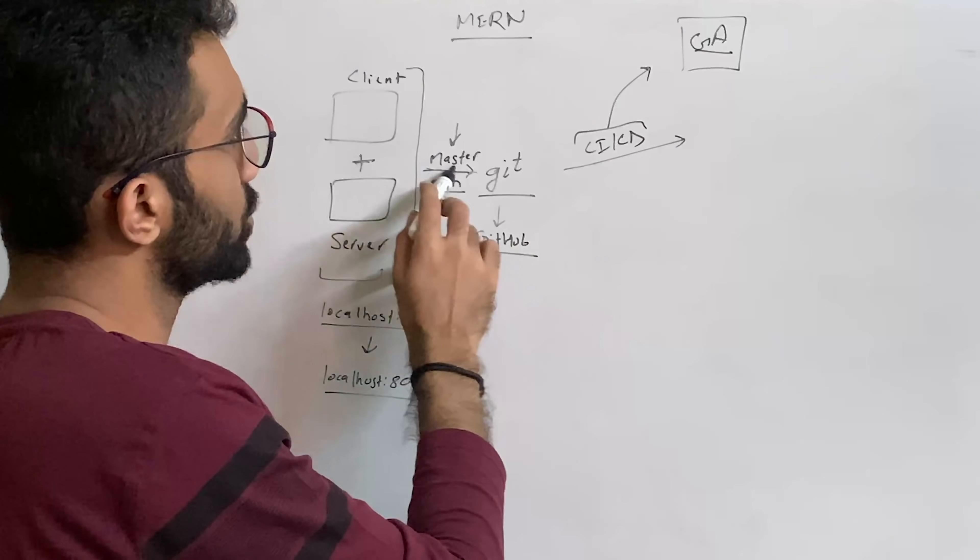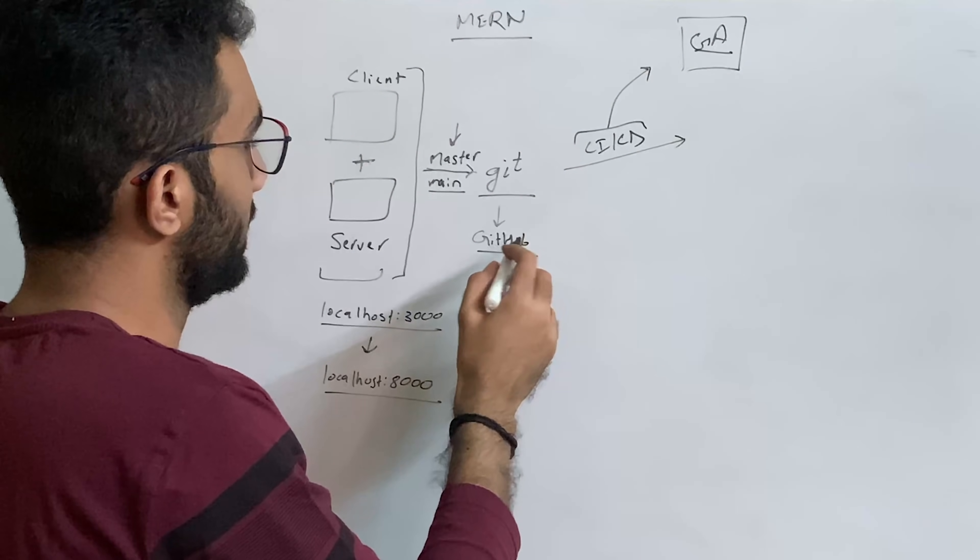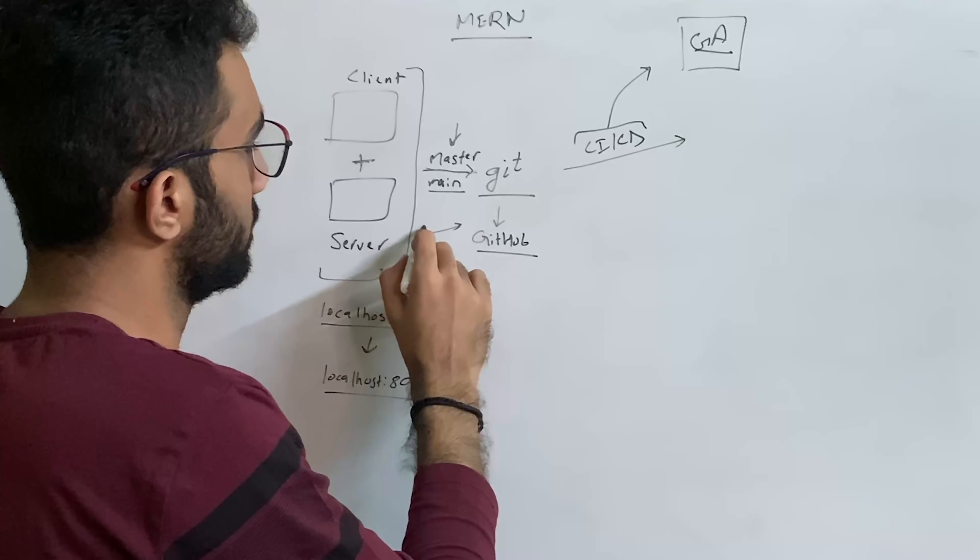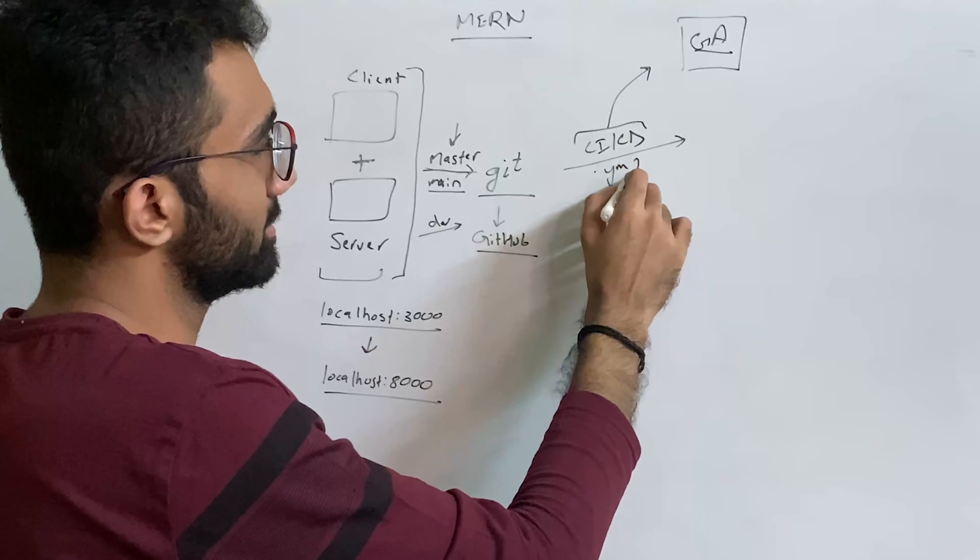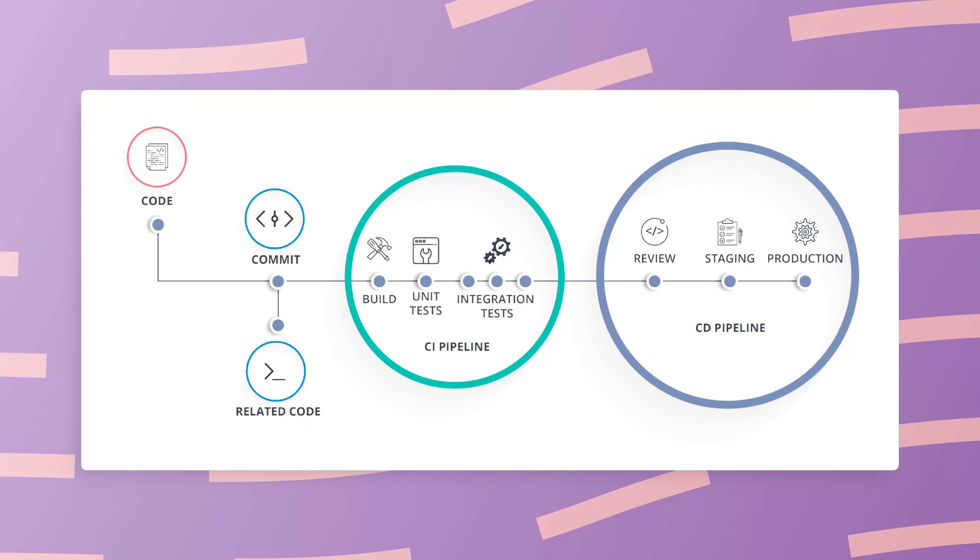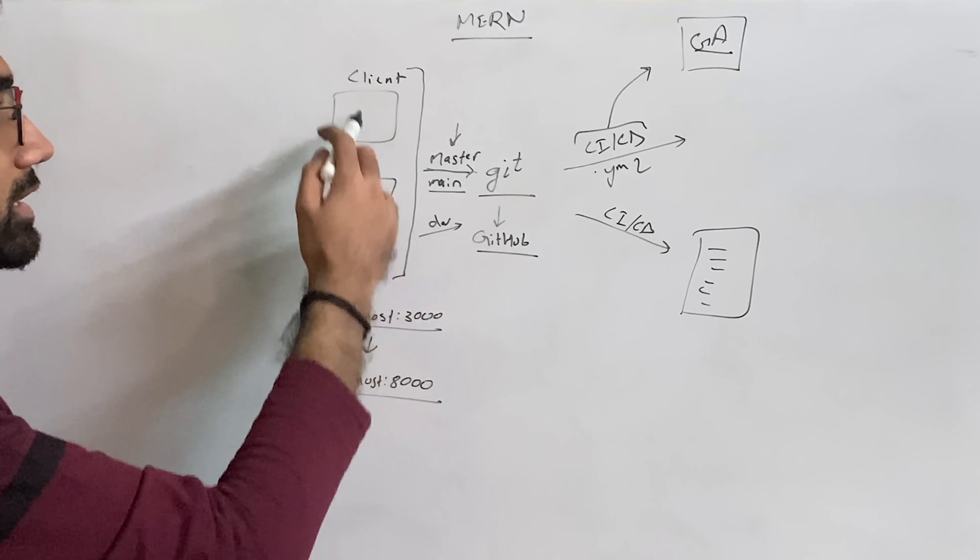So what I mean by this, let's say you push your code on Git on, let's say, a branch called dev, right? You have a CI/CD YAML file set up which spins up a CI/CD server which builds your code. So it builds your code, that's it, that builds it for the production release.